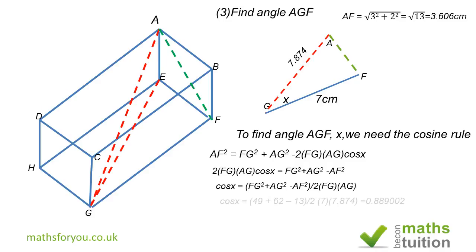So cos x now becomes FG squared, which we know is 7 squared, which is 49, plus AG squared from the last slide, which is 62, minus AF squared, which is 13. Divide all that by the product of 2 and 7 and 7.874, and you get something like 0.889002. When you look up the inverse of cosine, you get that x is 27.25 degrees.